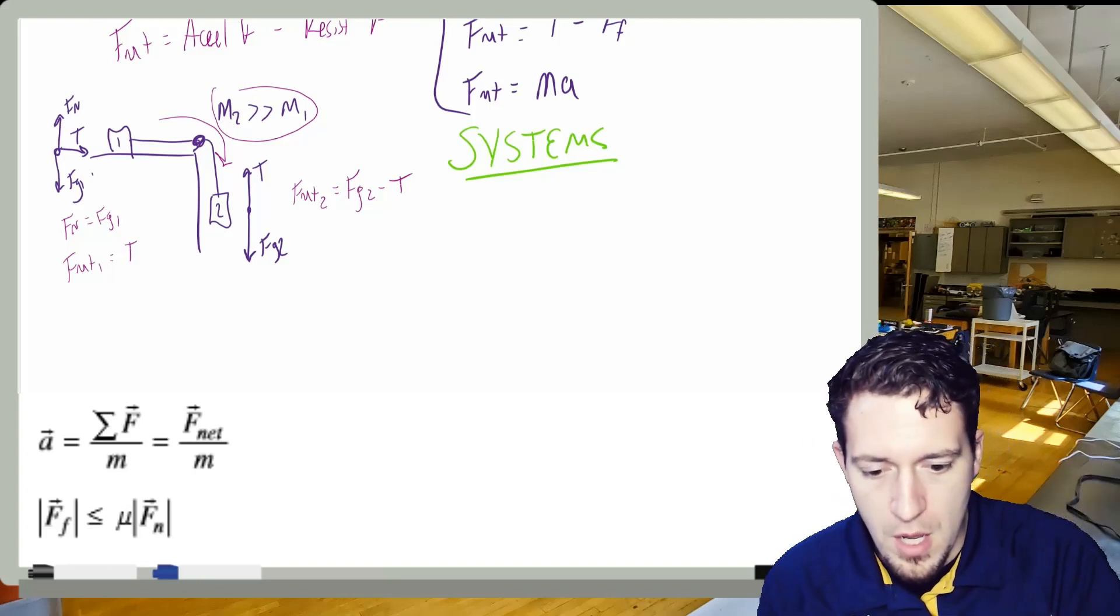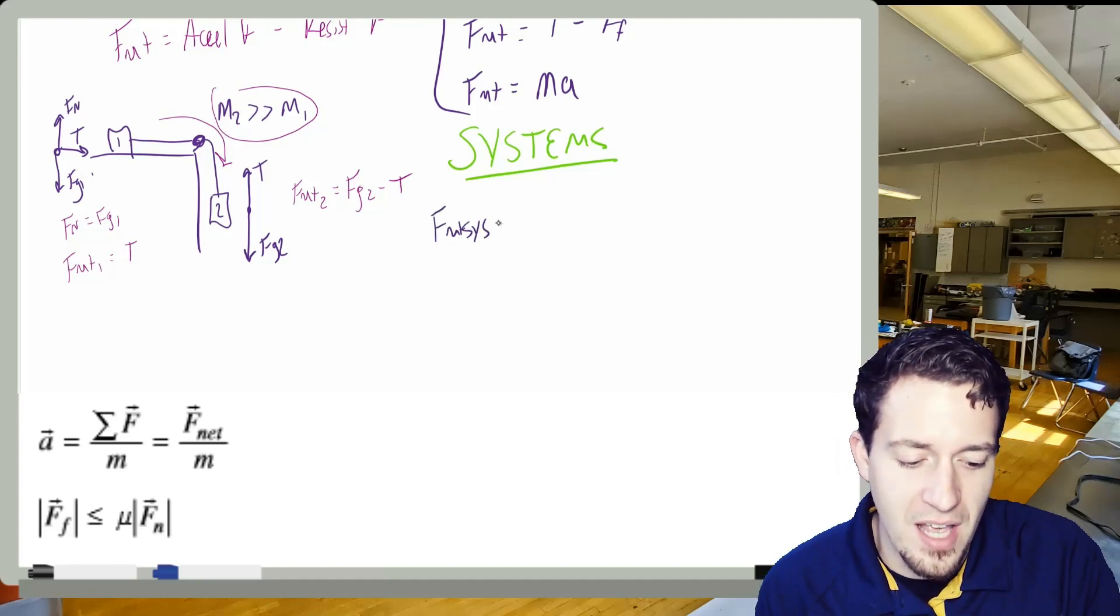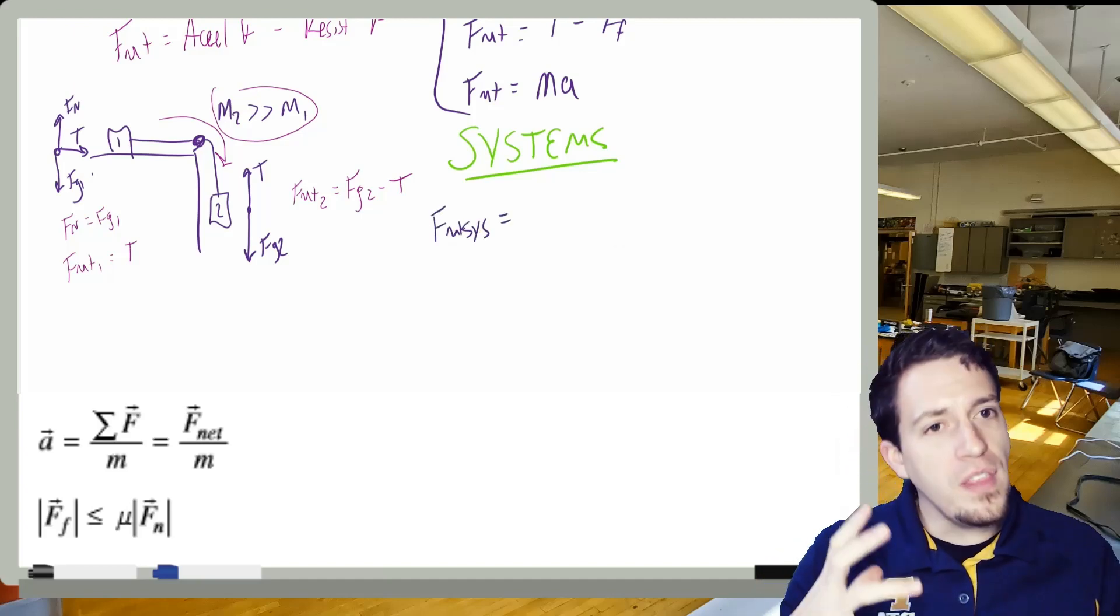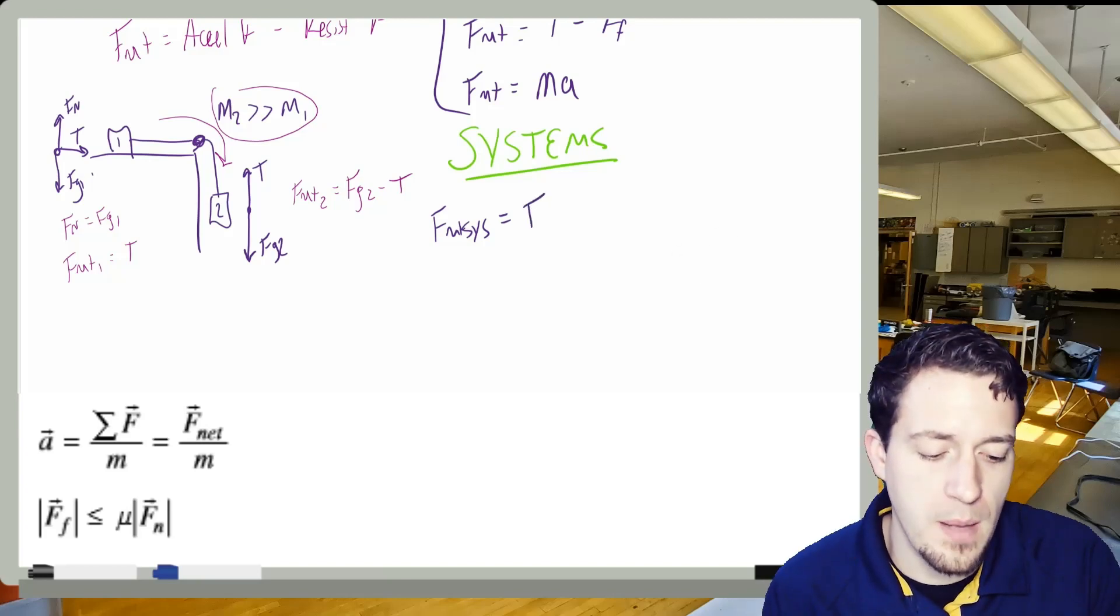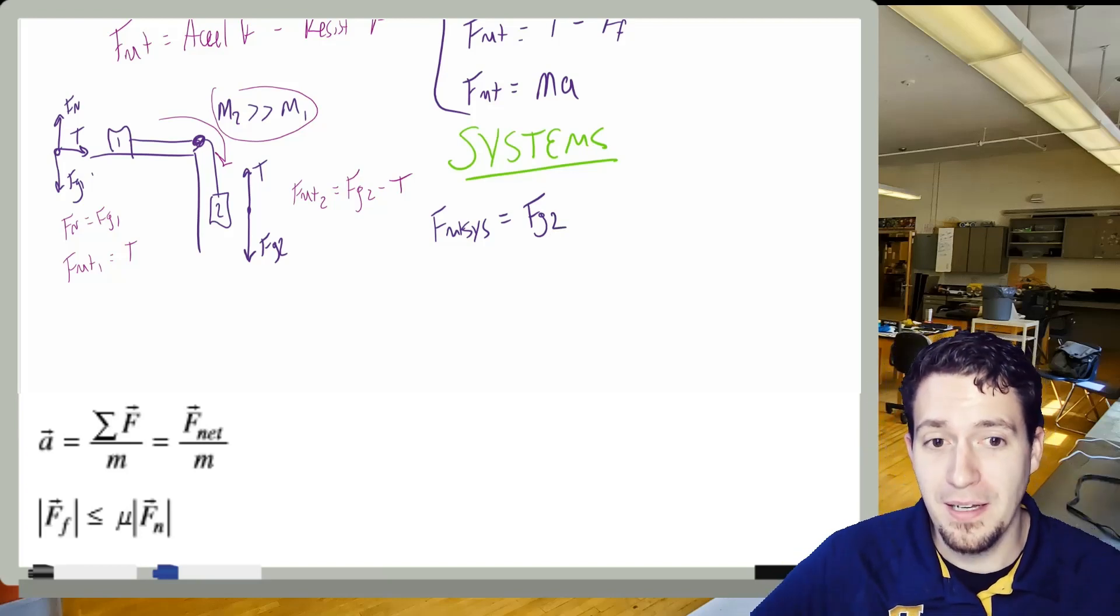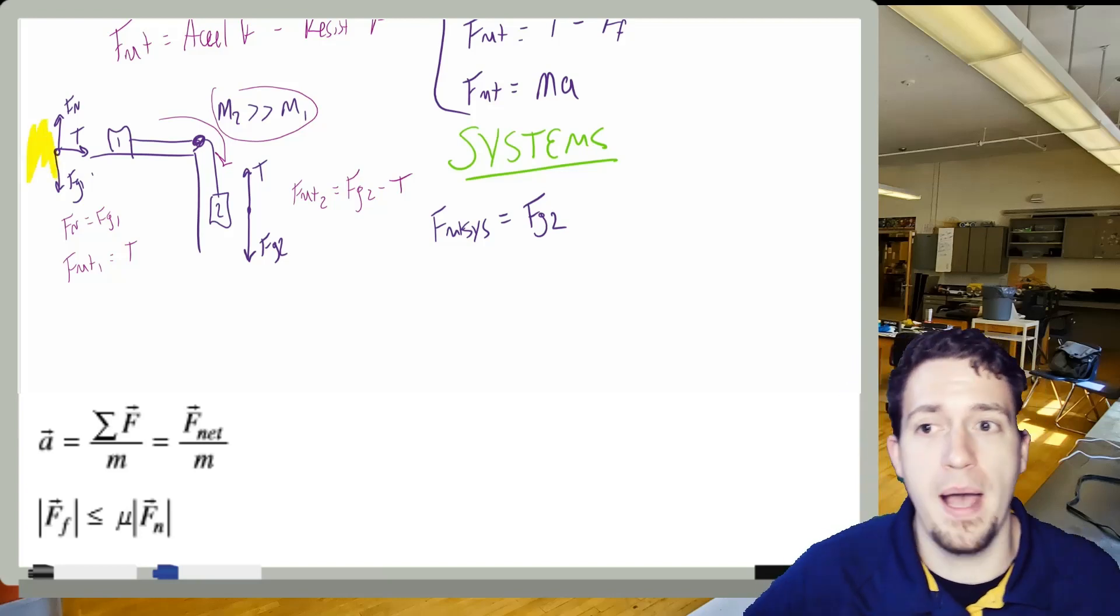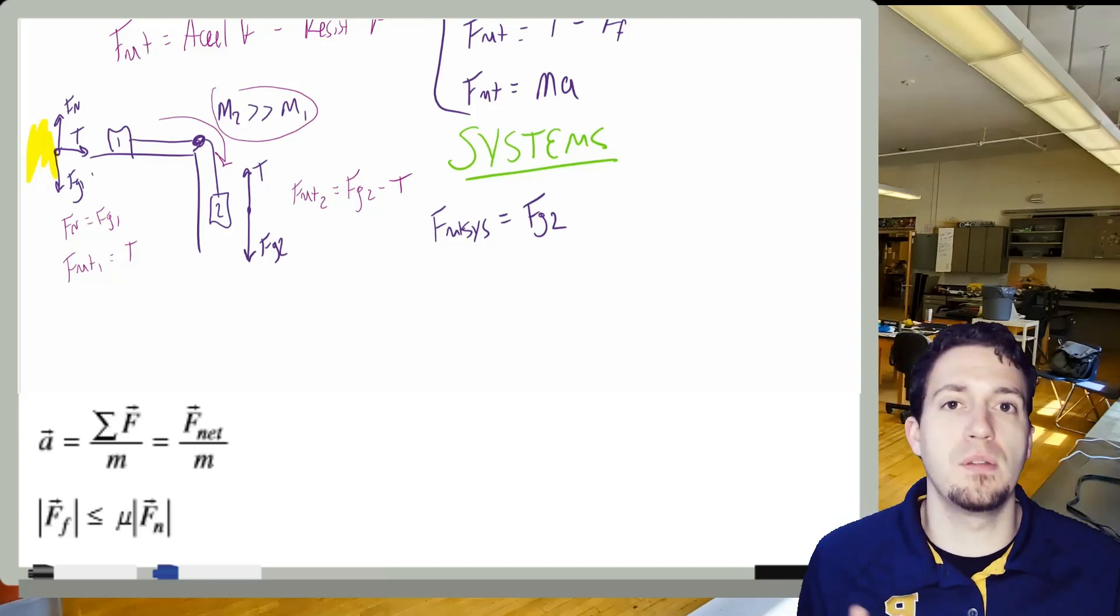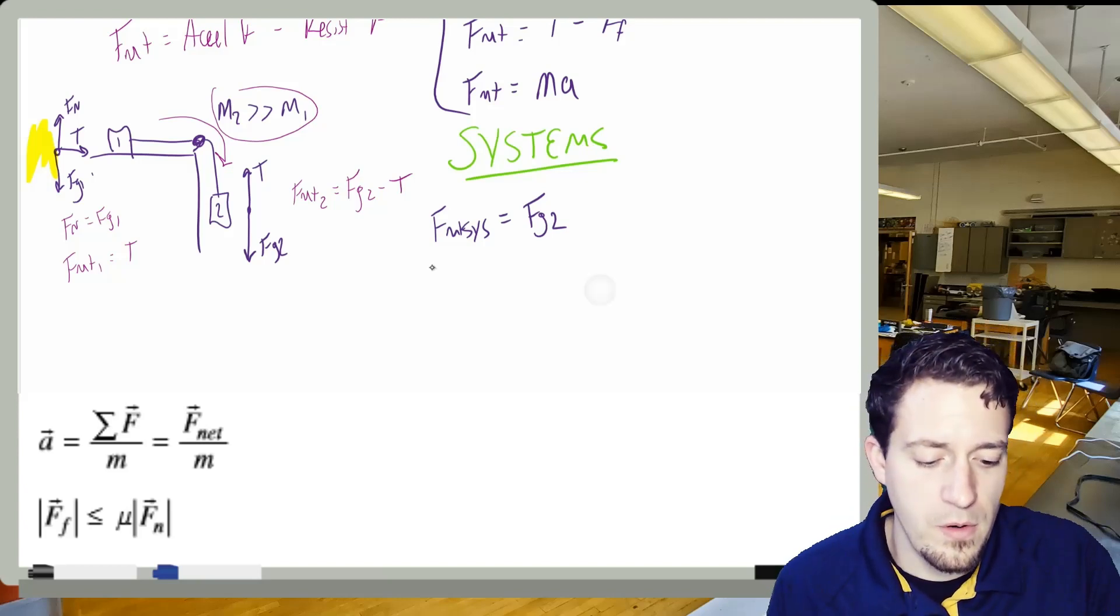If we treat this like a system now, so I'm going to treat this, I'm going to write this now as F_net sys. And now we have to think, what force is accelerating my system? What's going to accelerate my system? On this example, it would be FG2. And what holds my system back? In this example, nothing. If you look, there's nothing here on the backside of this FBD to resist the motion of this system. So then, I would take this a step further,